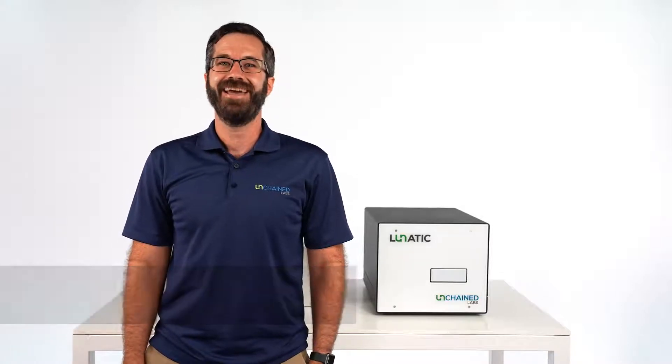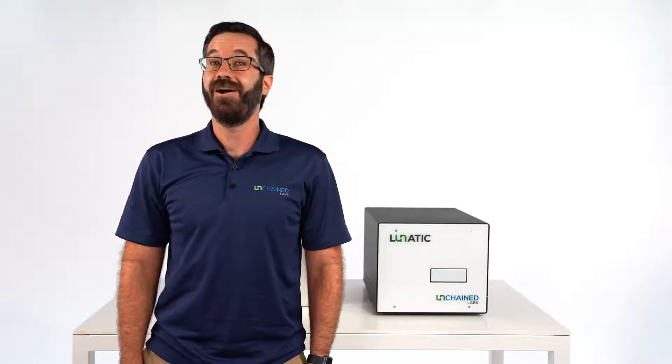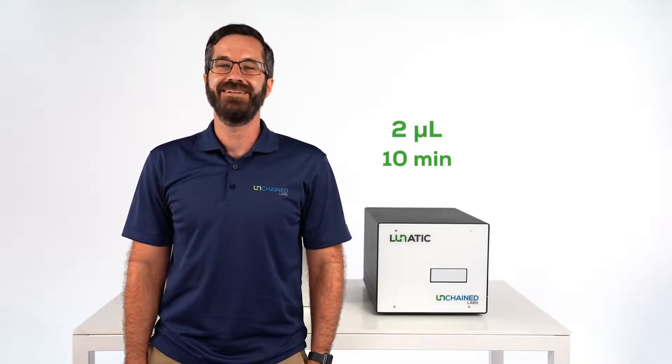Lunatic makes batch quantification of DNA and RNA a no-brainer. All you need is two microliters in 10 minutes to measure up to 96 samples.